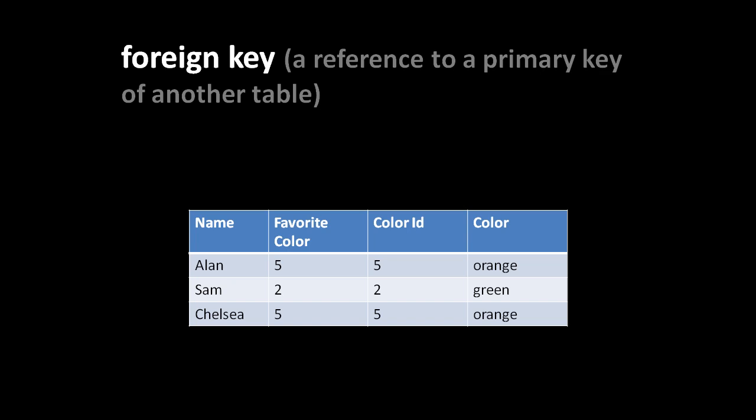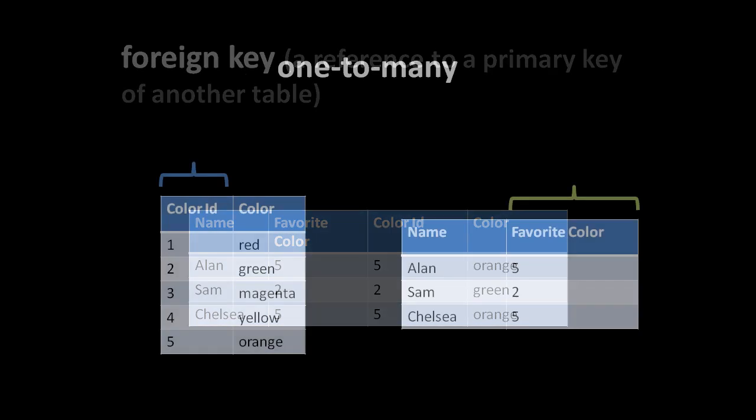As we'll see with more complicated schemas, such thinking tends to lead you astray. There are formal rules that have been devised for how to split data into multiple tables in a relational database. Before those formal rules, there are two simple guidelines concerning how to represent one-to-many relationships and many-to-many relationships.